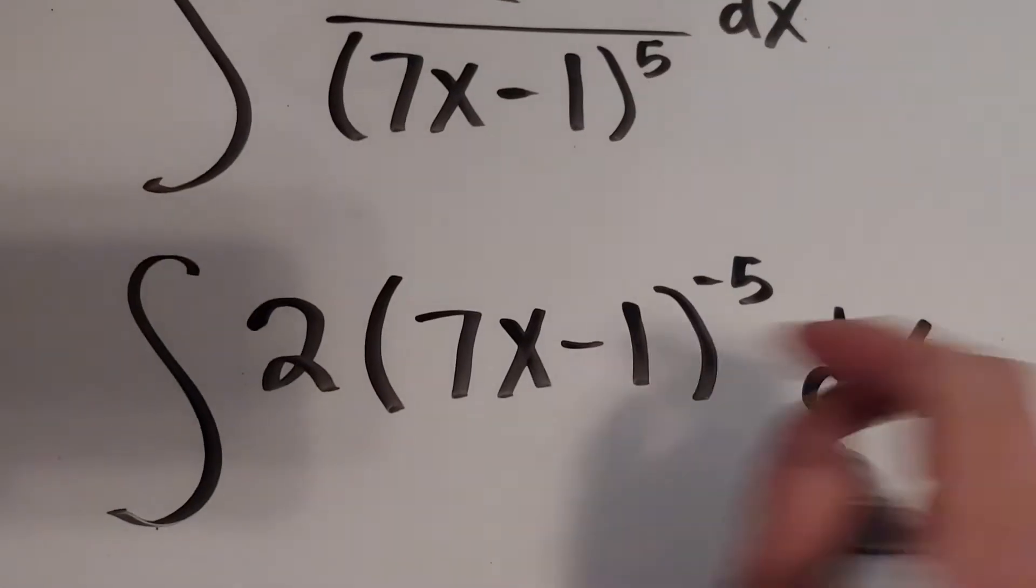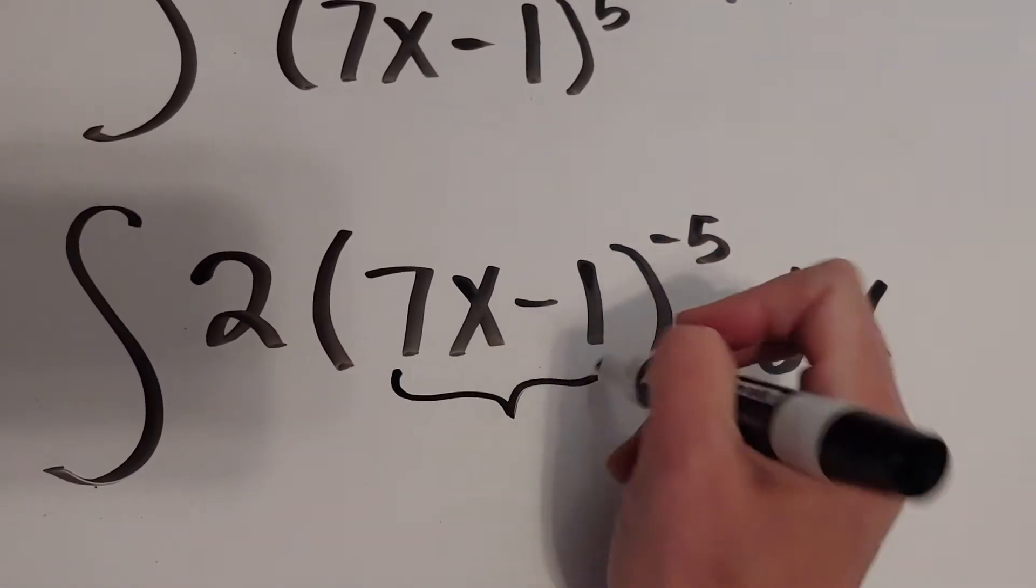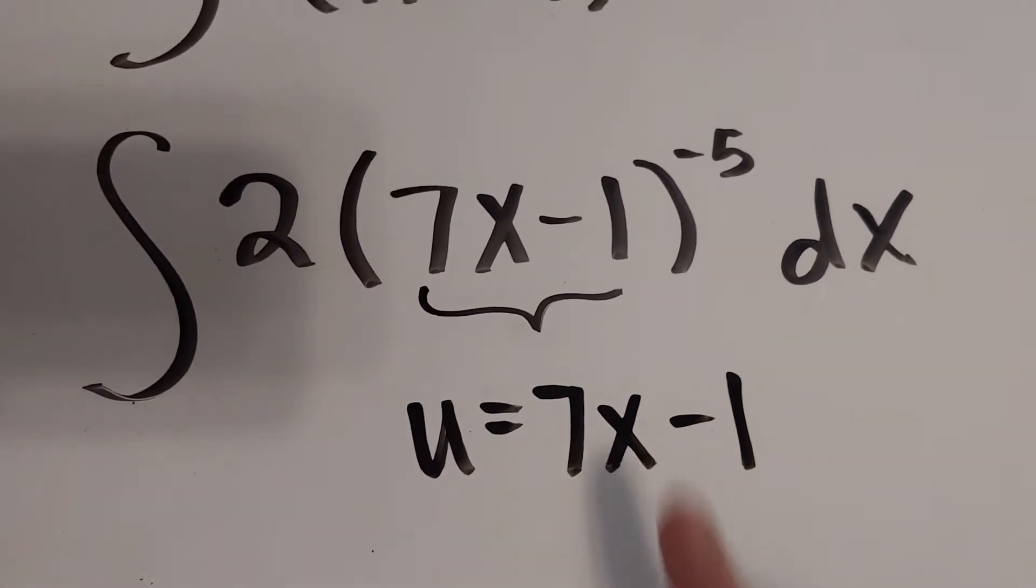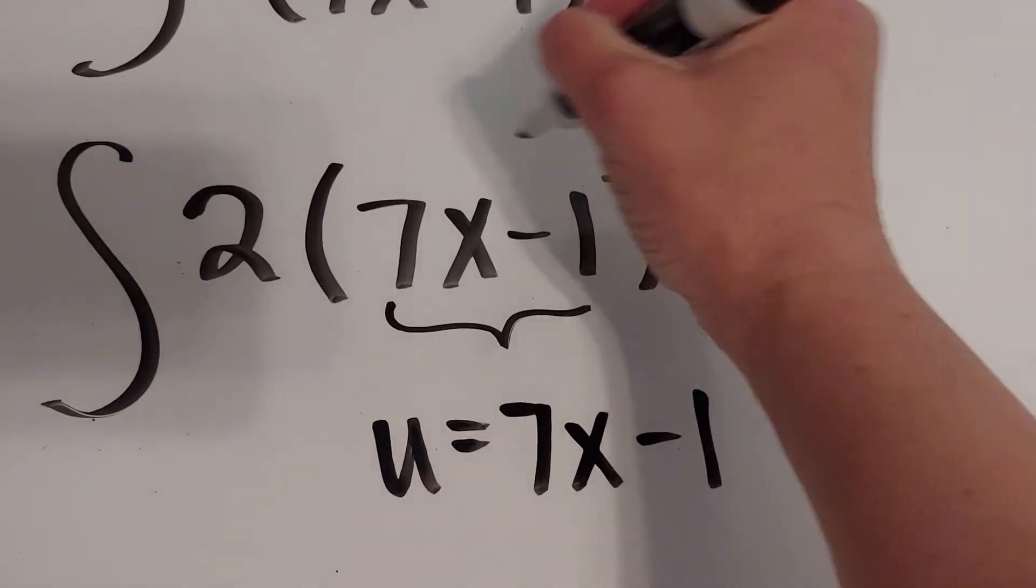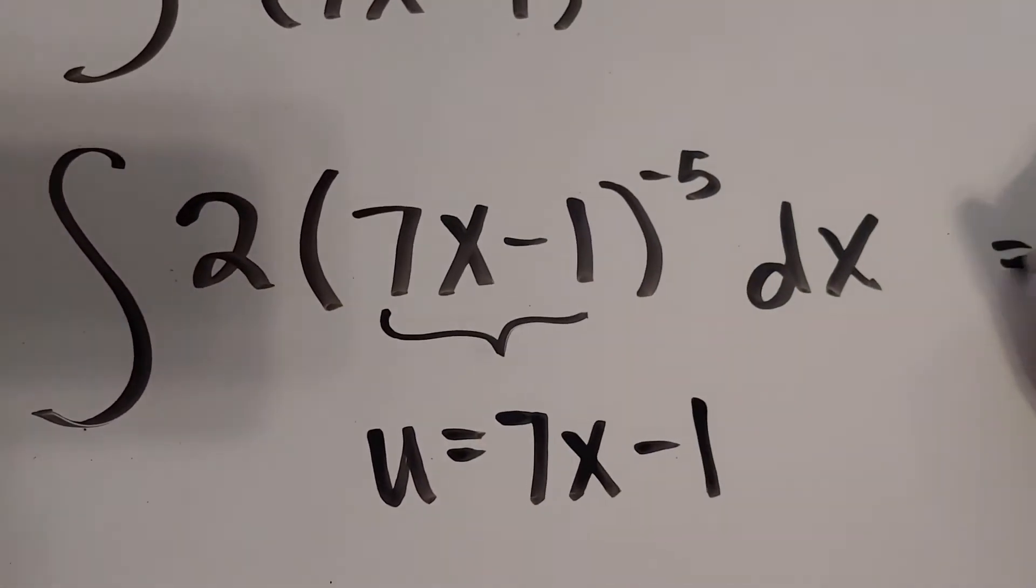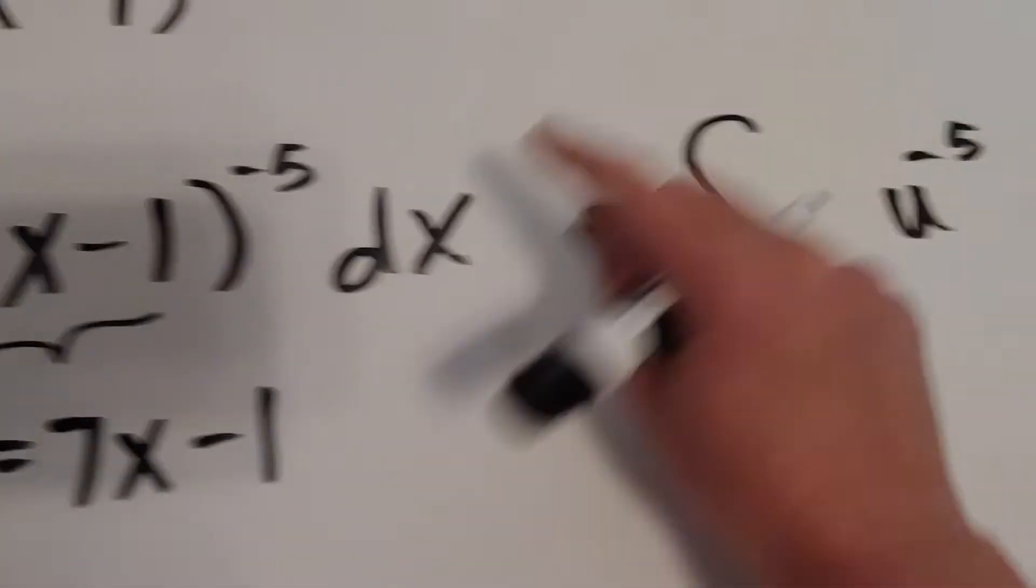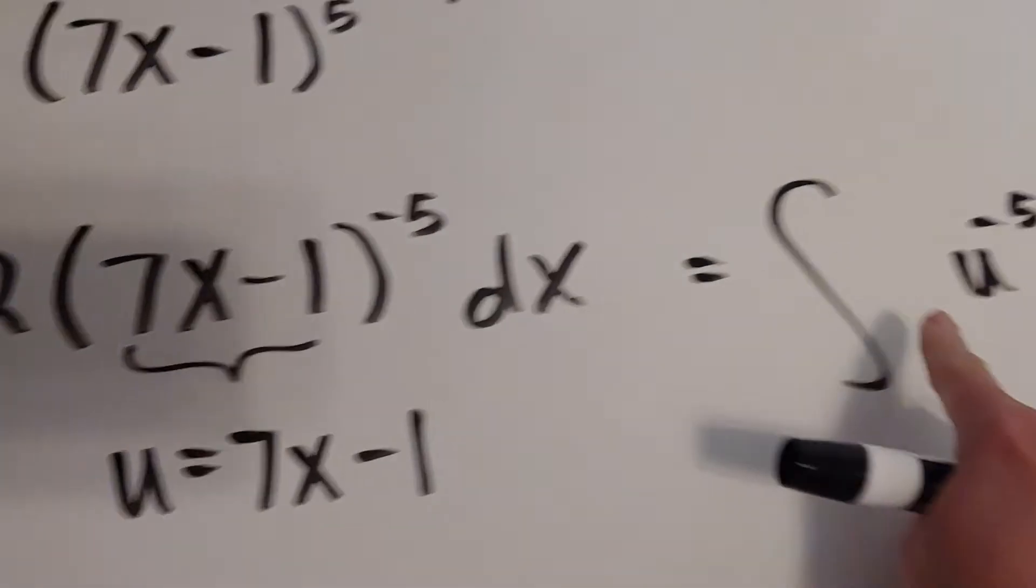All right, so what I'm going to have here is that u is going to equal 7x minus 1. So right now, this is going to be u to the negative 5th. So actually, let me go ahead and write that to the side. I've got a u to the negative 5th, so that's what this piece to this piece is.